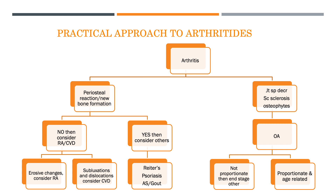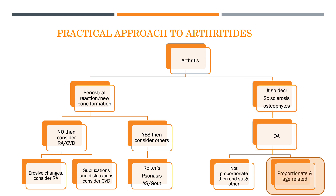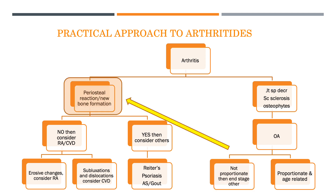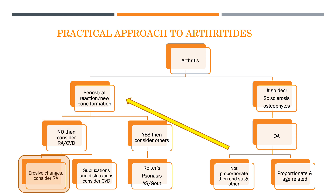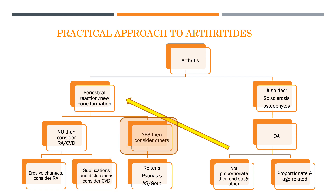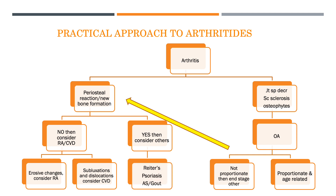In our practical approach: if we see joint space destruction, subchondral sclerosis, and osteophytes, we think osteoarthritis. If proportional and age-related, we call it primary osteoarthritis. If not, we look for periosteal reaction and new bone formation. Without these, we think rheumatoid category - rheumatoid arthritis with erosions, or collagen vascular disease with subluxations and dislocations but fewer erosions. If periosteal reaction is present, we consider Reiter's, psoriasis, ankylosing spondylitis, and gout.